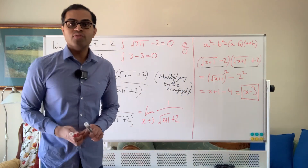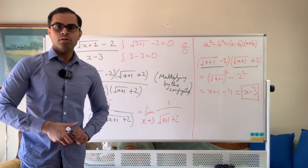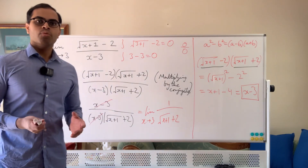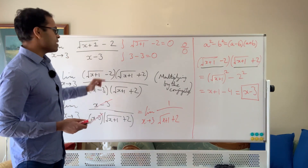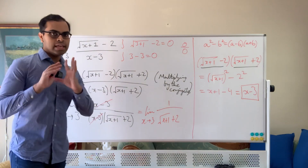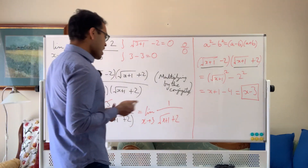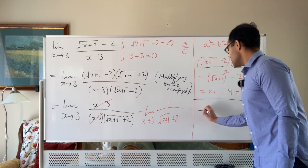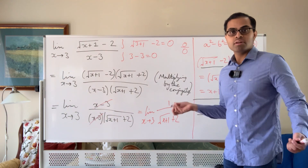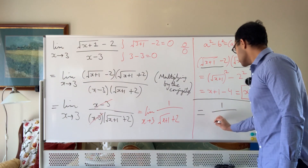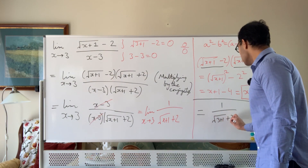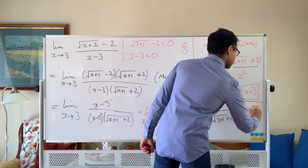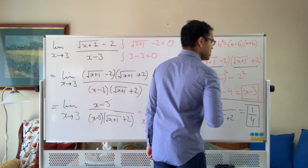Now we get the limit as x goes to 3 of 1 over the root of x plus 1 plus 2. It is no longer a 0 over 0 limit. The culprit was the x minus 3. With 0 over 0 limits involving polynomials or radicals, the culprit is something like x minus 3 — you cancel it off to get something that's no longer 0 over 0. Plugging in x equals 3 gives 1 over the square root of 4 plus 2, which is 1 over 4.